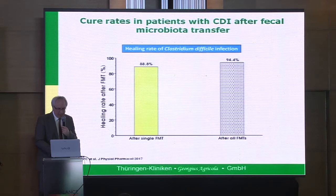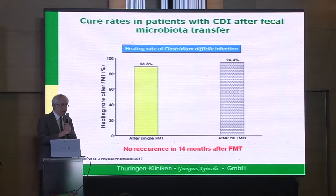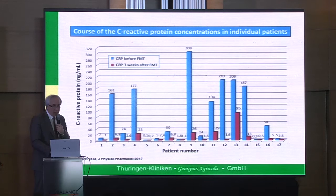What is more important, we have follow-up of more than 20 months after FMT and there was no recurrence in any patient after this method. We also looked at changes in CRP — the blue bars are before and red is after FMT — showing a very fast decrease in this pro-inflammatory marker in blood.